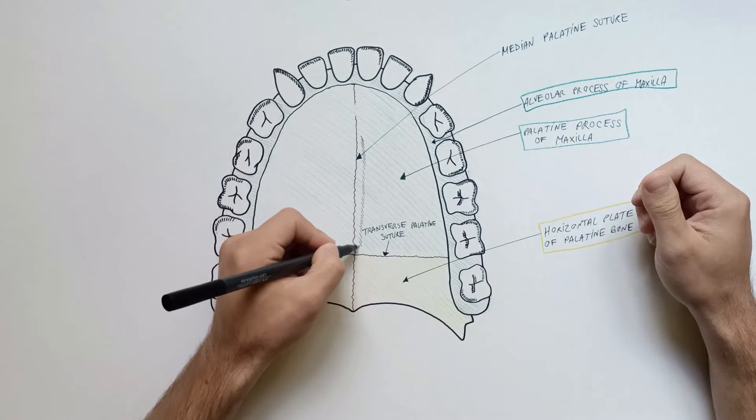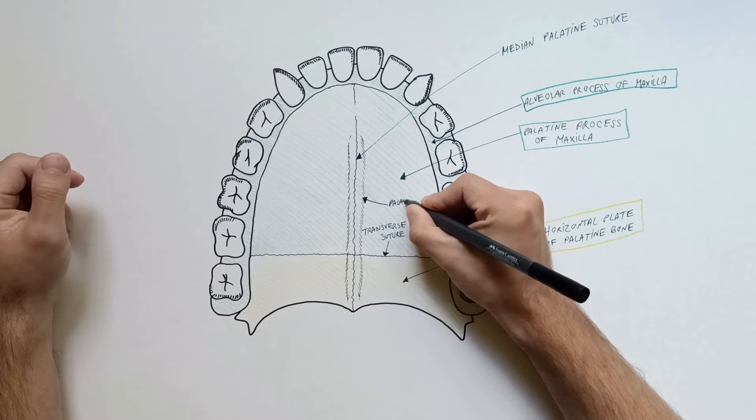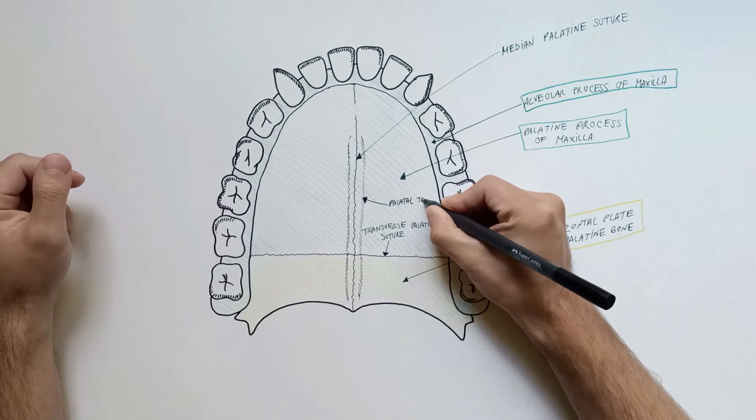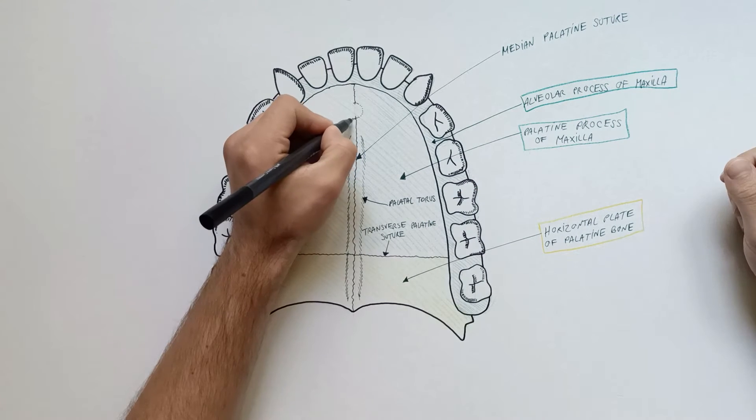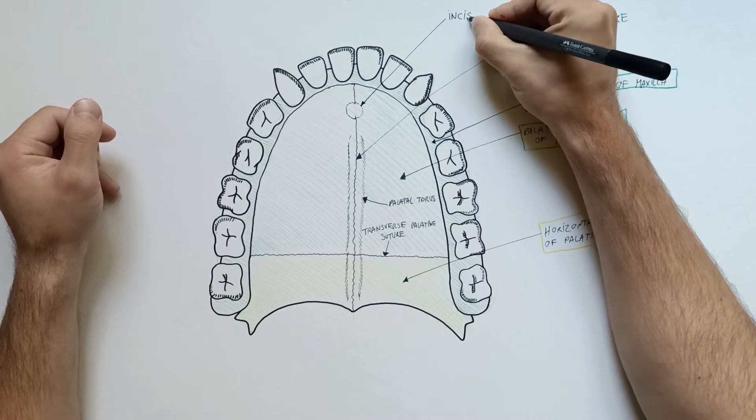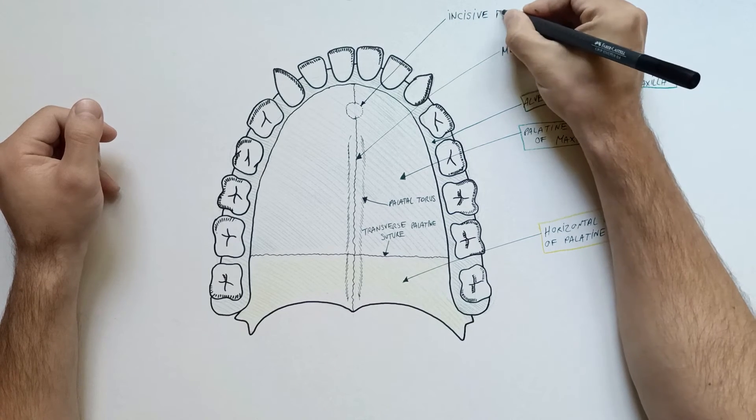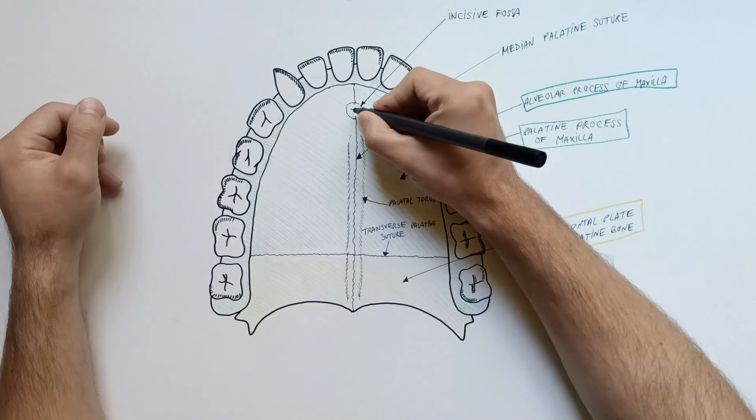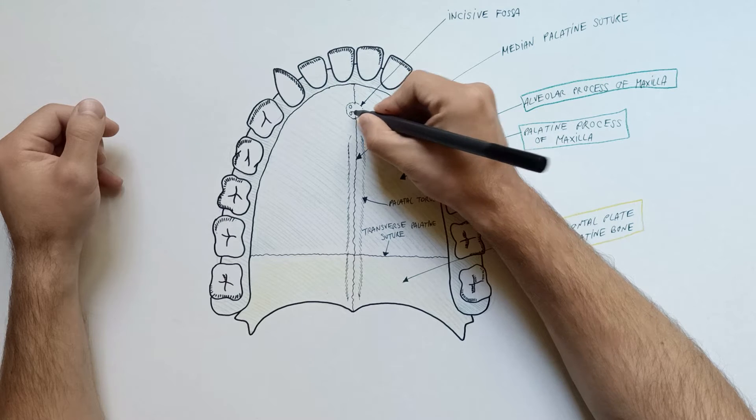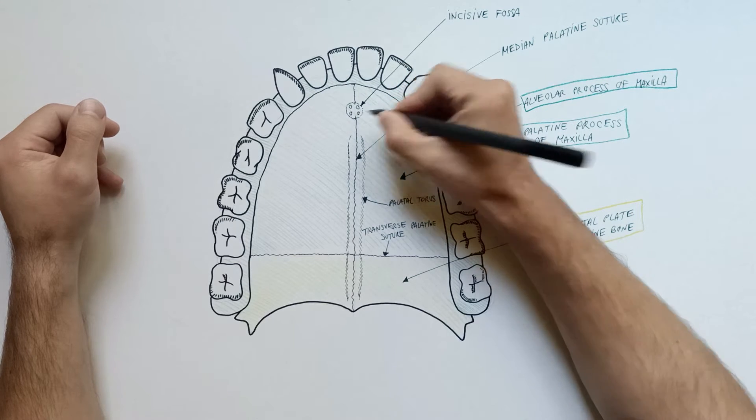Bony mounds or ridges called palatal torus may develop on the midline along the median suture. The incisive fossa is present anteriorly in the midline behind the incisors. Into this fossa opens the incisive canals, two for each side.